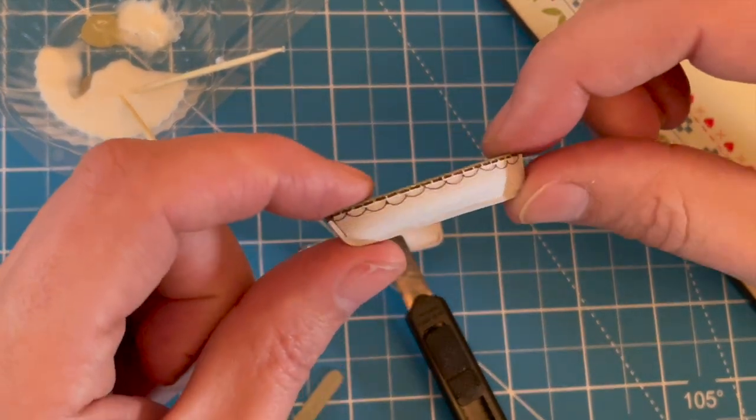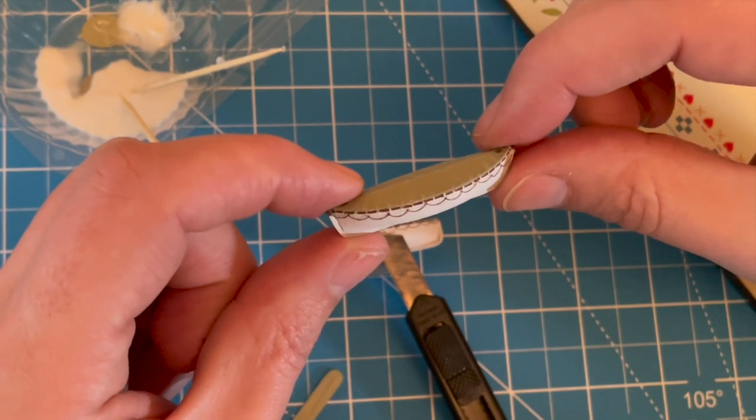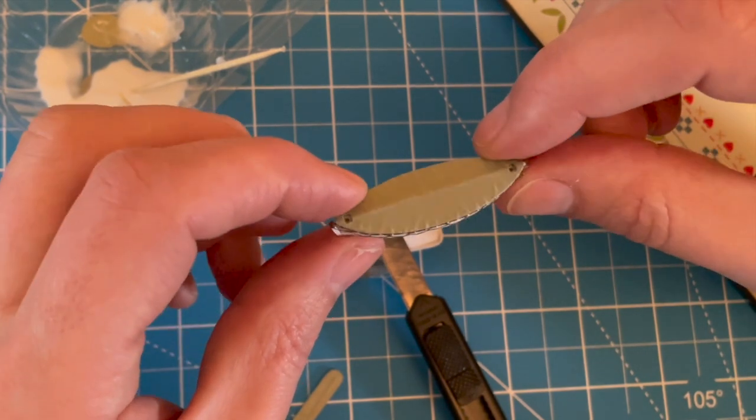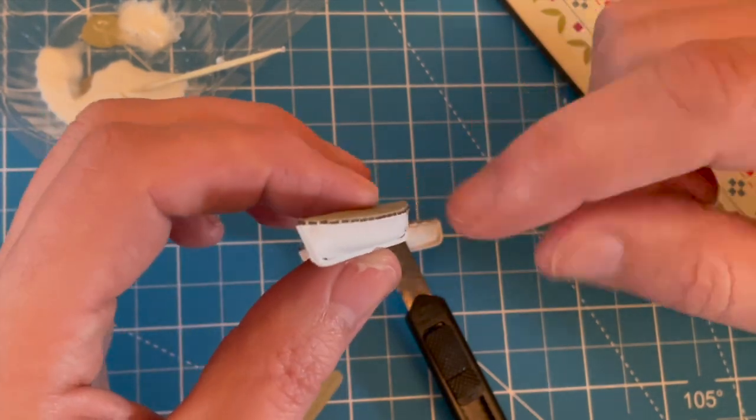So while the glue sets on that one, I'll just show you one I did earlier. And it's really worth taking the time to do them, so it really finishes off the lifeboat really well. That's the effect you can get. And now I just have to do the other side on all 16 boats. Oh lord.